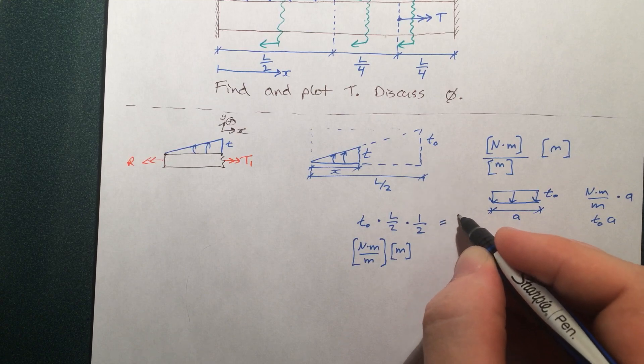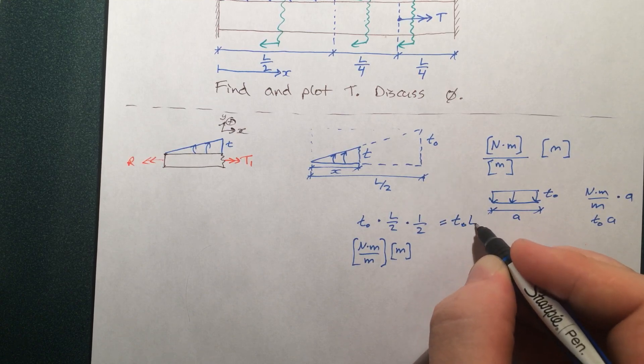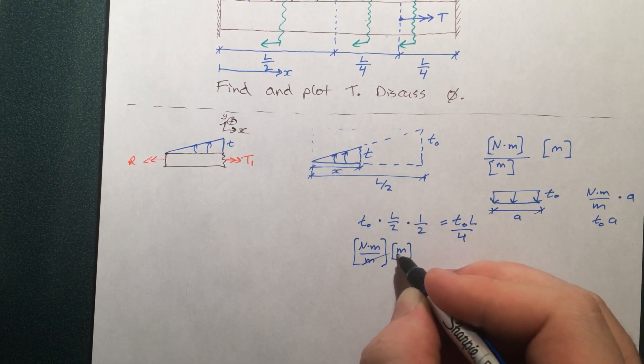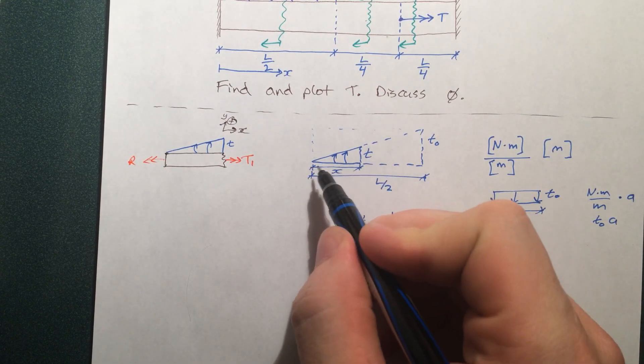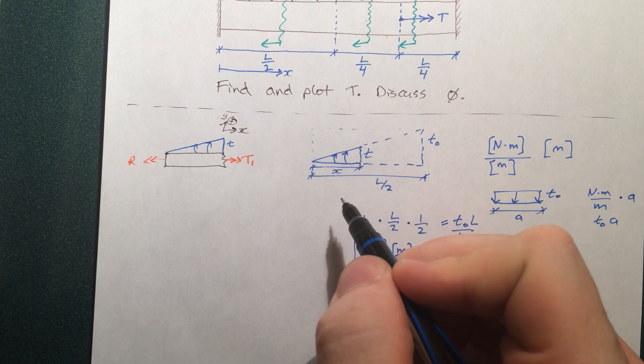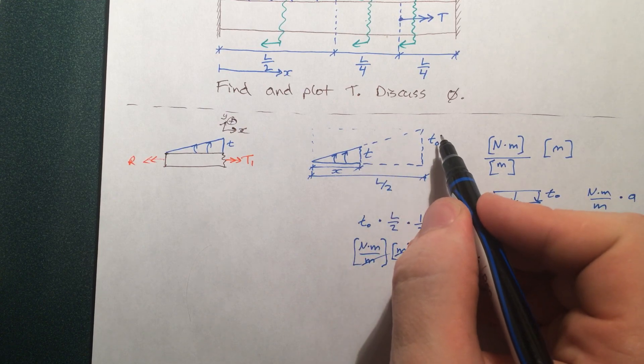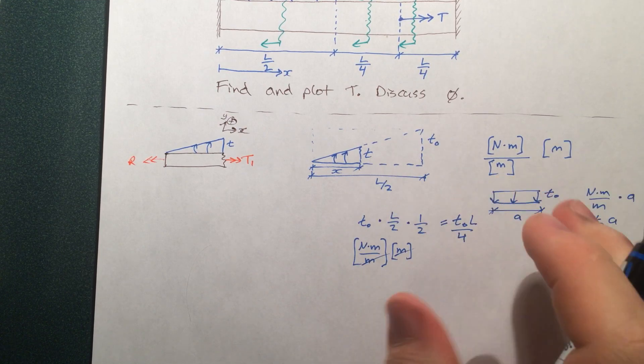So the total torque delivered by that piece is T-naught L by 4. As you can see, that's just newton meters, exactly what we want. So now in order to find the amount of torque given by this distribution, we do the same process, but we need to know this value here, and in this place I'm going to call it T.